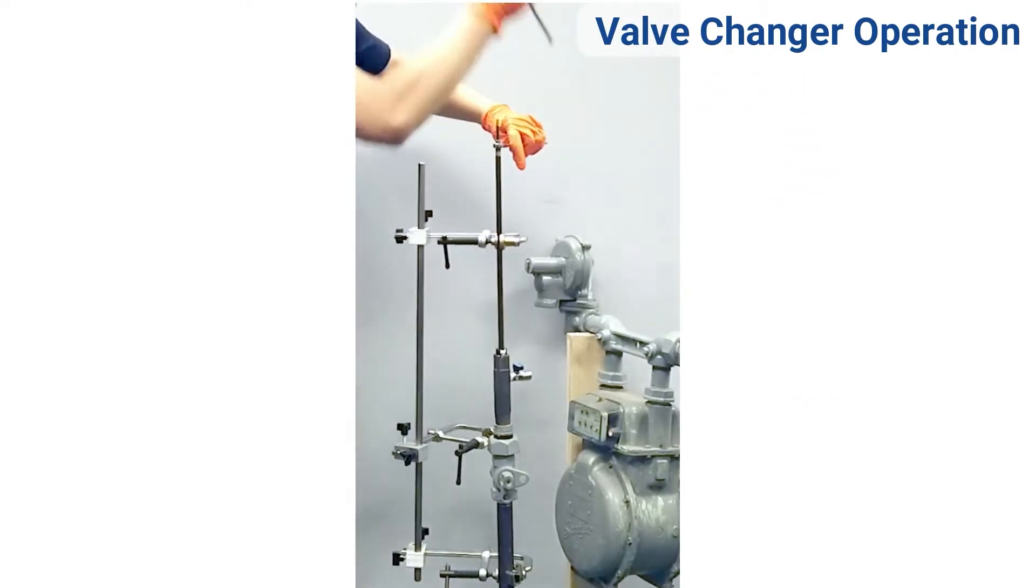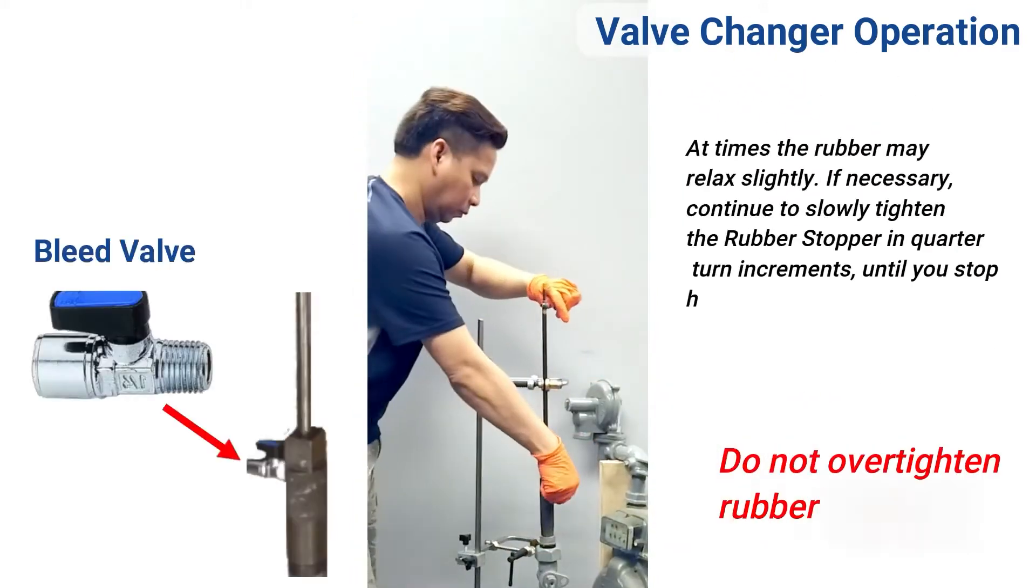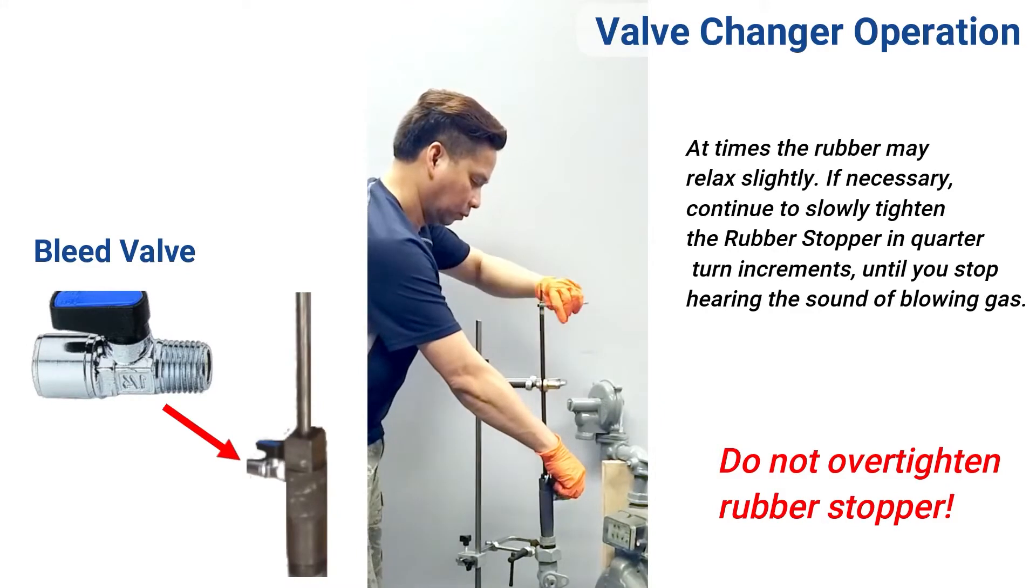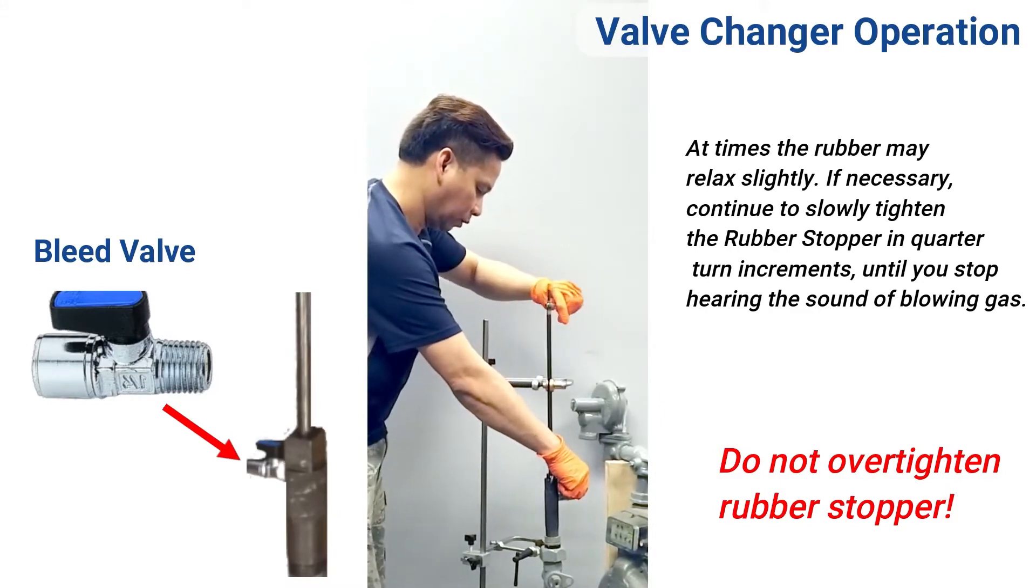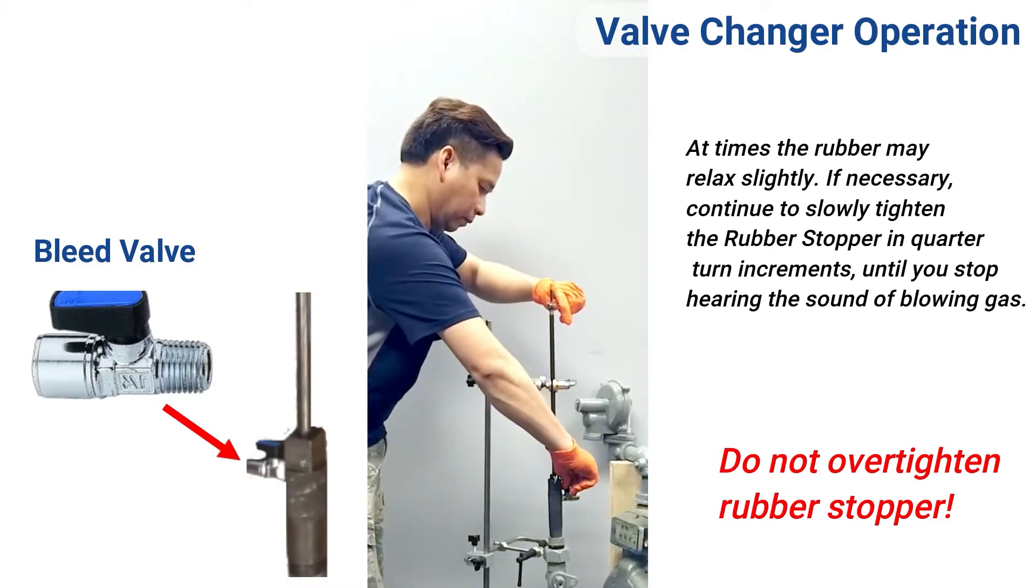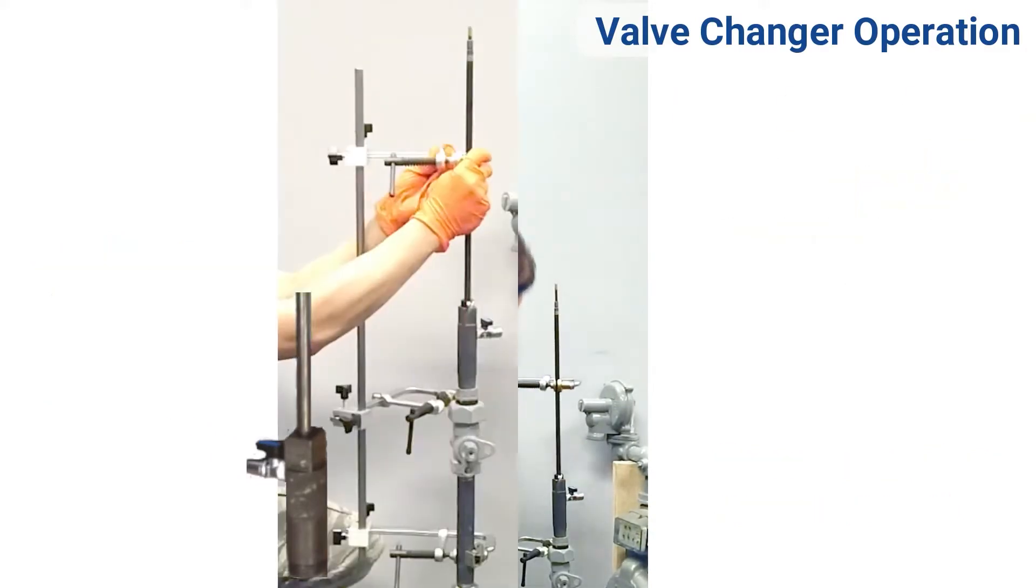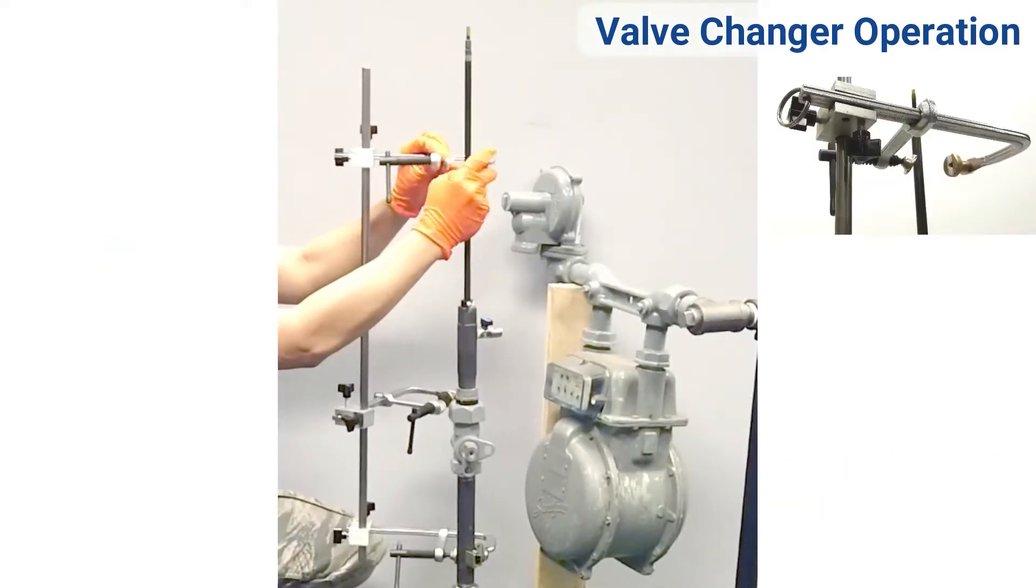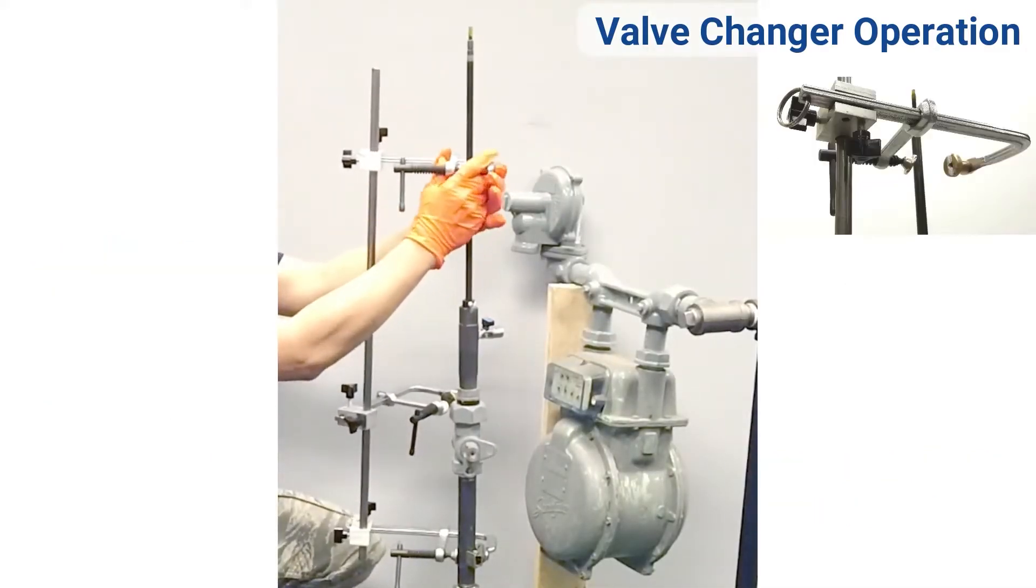Open the bleeder valve. Continue to slowly expand the rubber stopper in quarter turn increments until the sound of blowing gas has stopped. Do not over tighten. Once gas has stopped, fasten the top clamp.